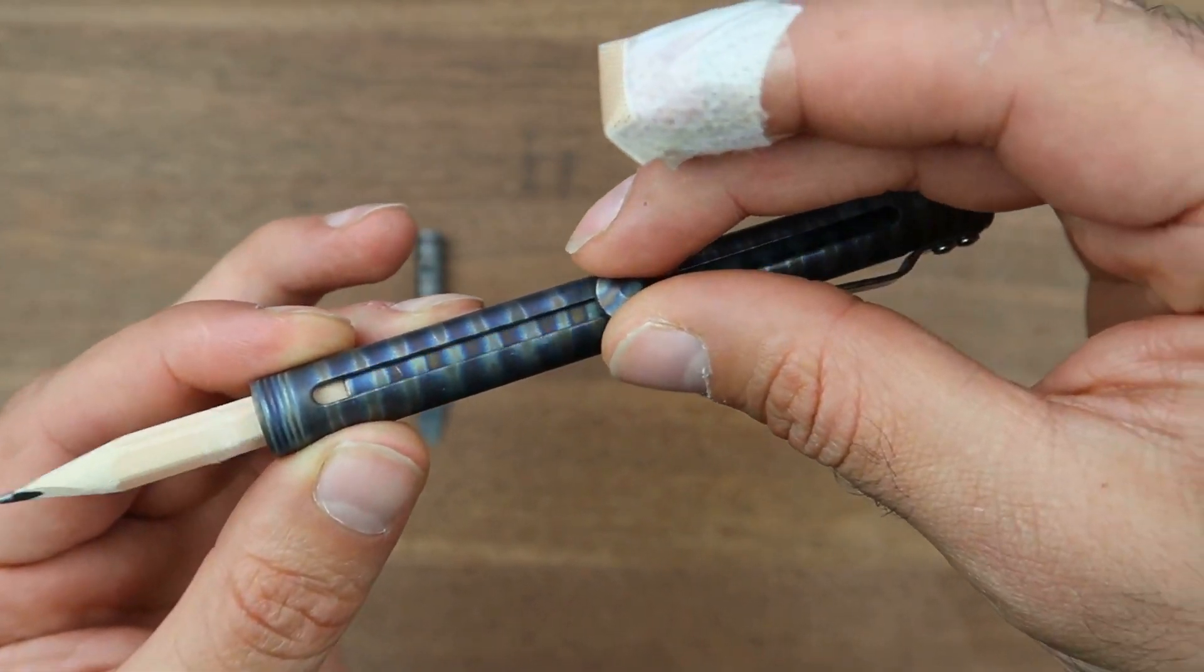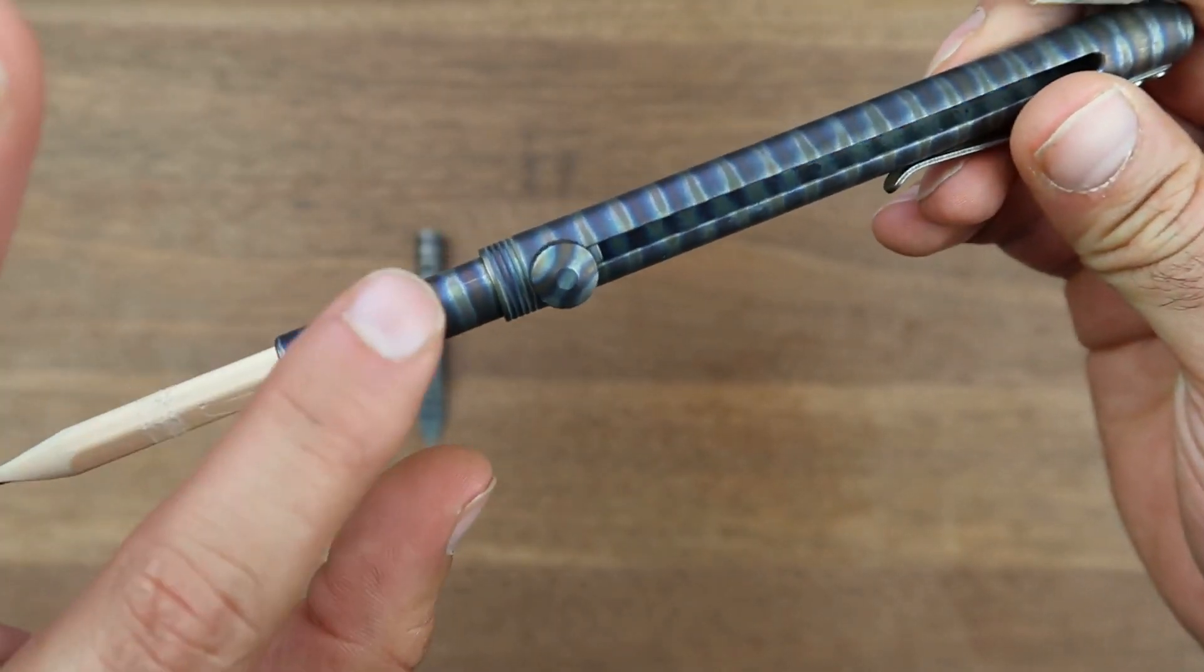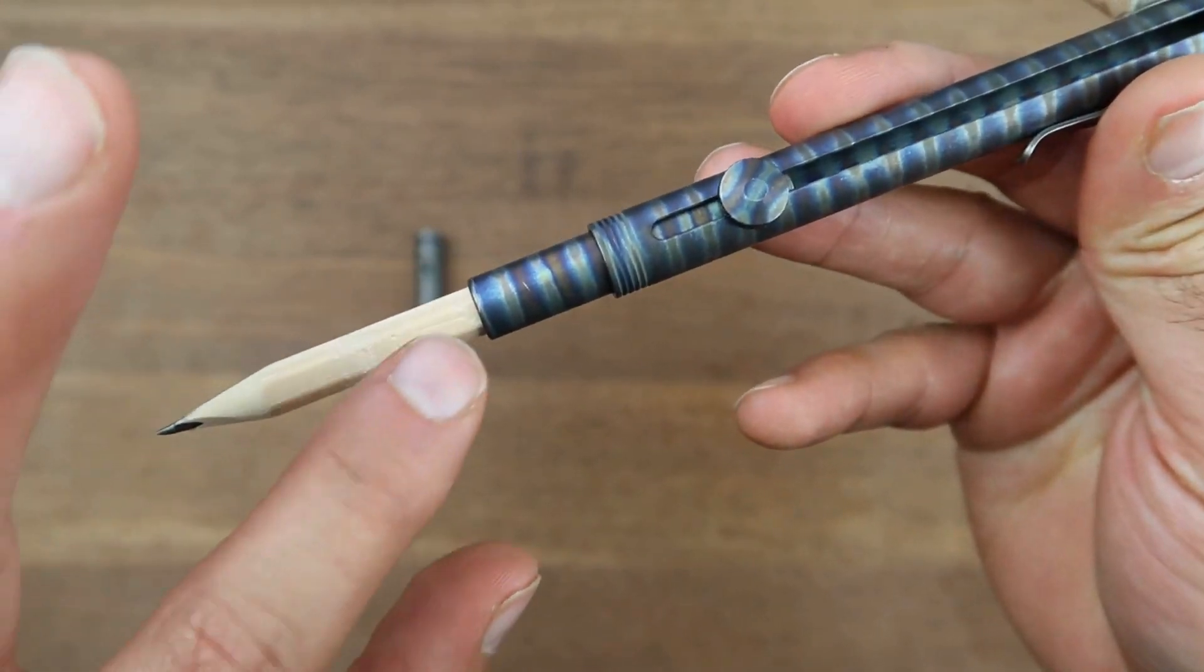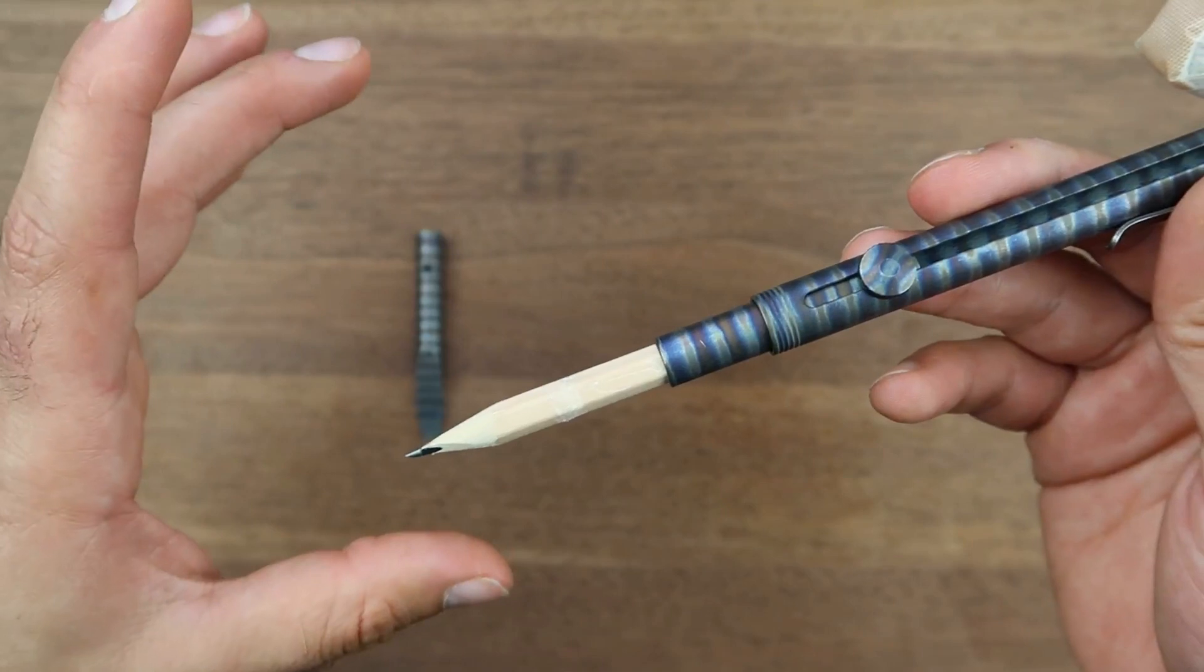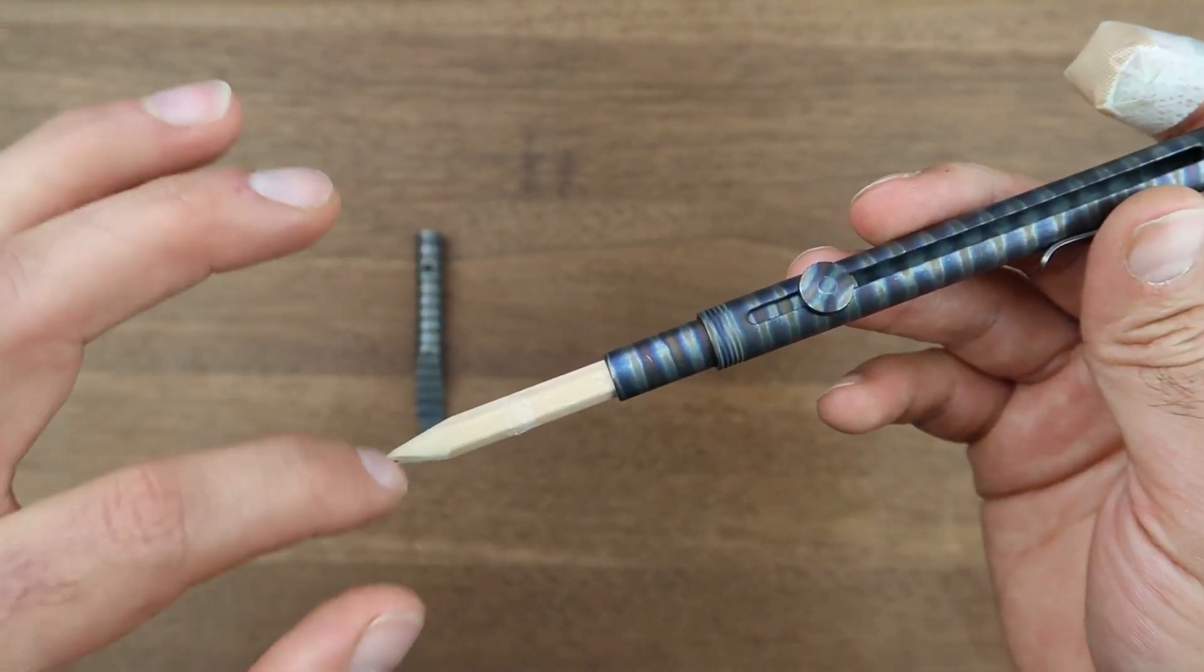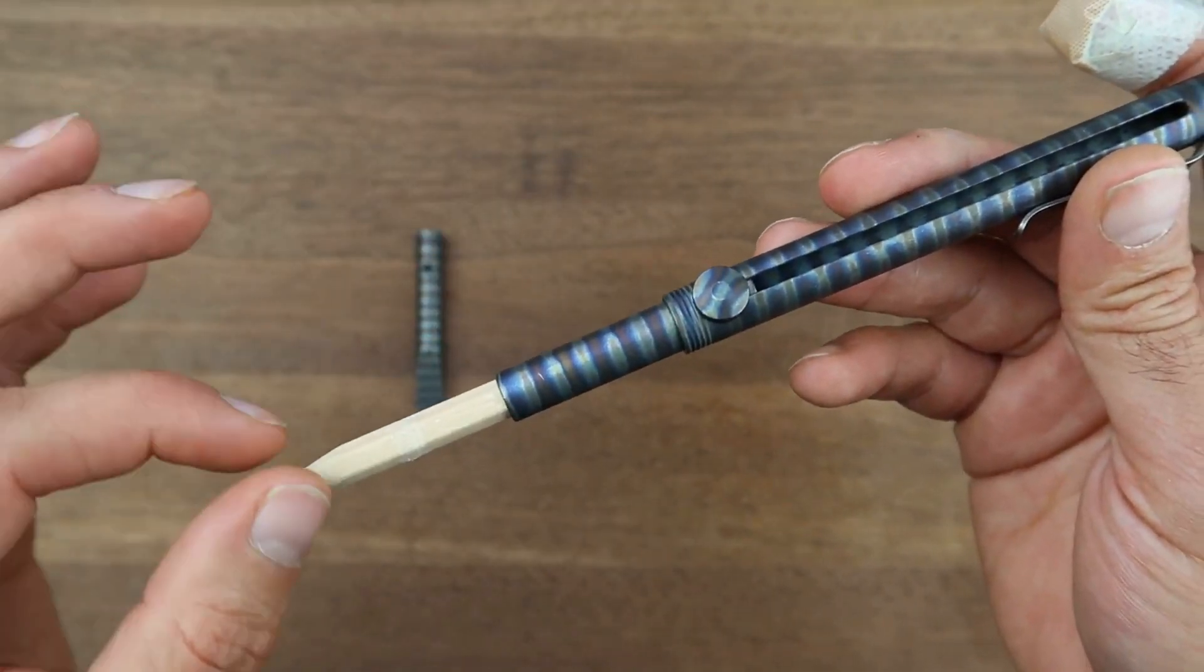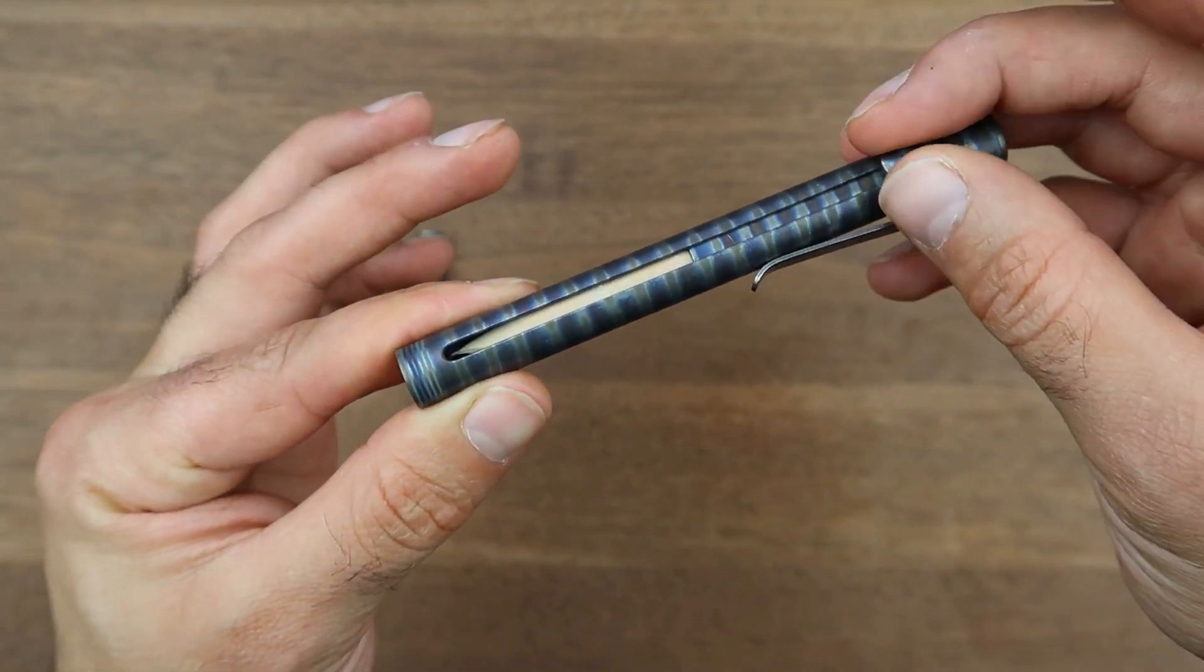The way it works: you unscrew this knob a little bit to loosen it up and then you can slide this pencil holder out. This is the pencil holder that holds the pencil up to about nine centimeters. Usually you get a full size pencil cut in half or into three pieces, sharpen one end, and then insert it into this holder.